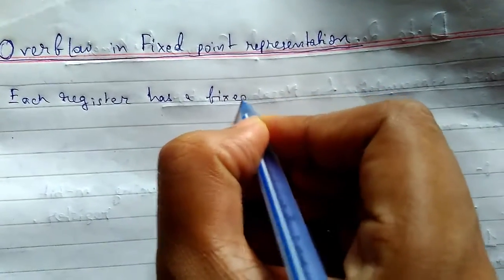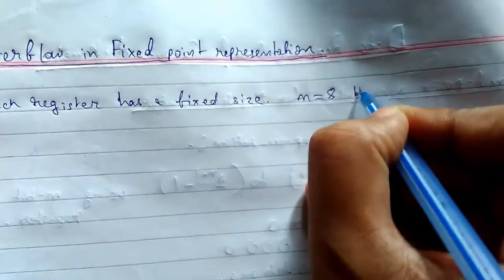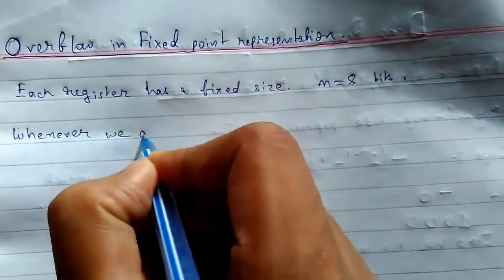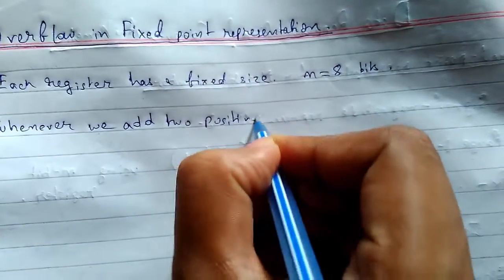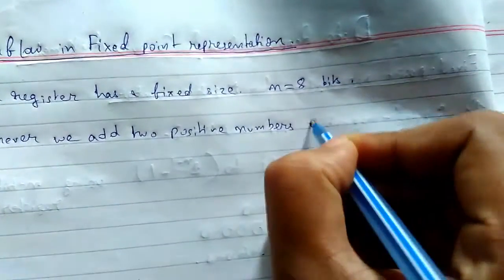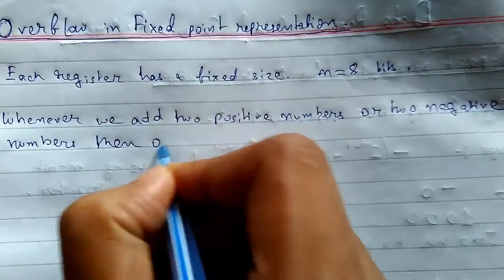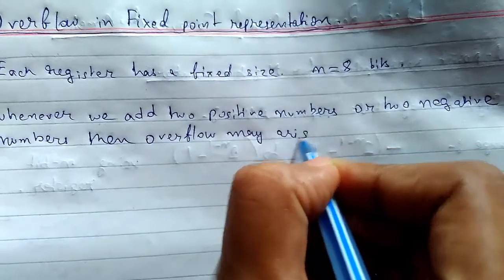The size will be anything like n equals 8 bits, which should not be exceeded. Whenever we add two positive numbers or two negative numbers, overflow may arise.